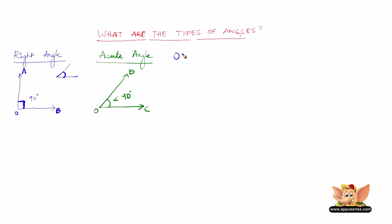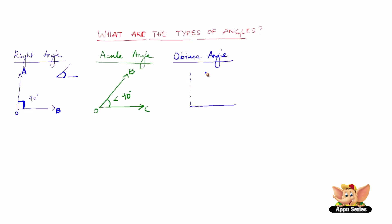The next kind of angle is the obtuse angle. An obtuse angle is an angle whose measure is more than 90 degrees. We have the reference line of 90 degrees here. Going back to acute angle — we have 90 degrees here, and any angle to the right side of this line is an acute angle.